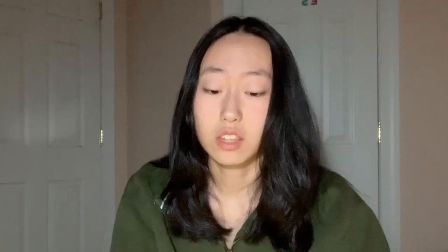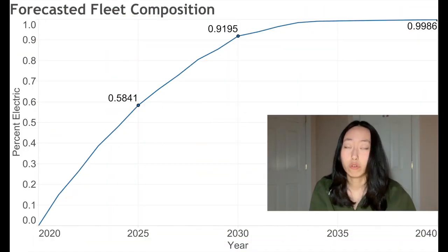After running a simulation on a fleet of 1.7 million semi-trucks with random initial mileages, we found that 58.41% of semi-truck fleets will be electric in 5 years, 91.95% in 10 years, and 99.86% in 20 years.